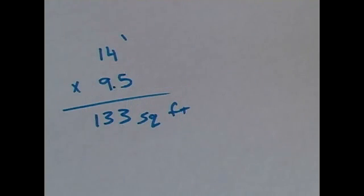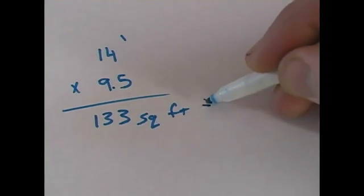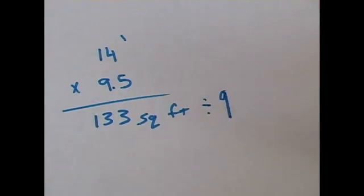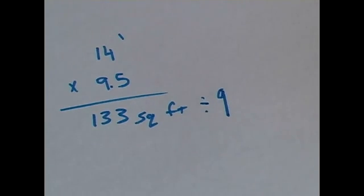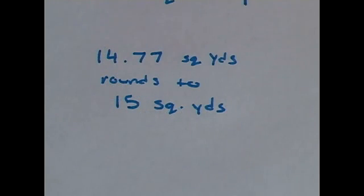Now to convert from square footage into square yards, we need to divide our total by nine. The total then is 14.77 square yards, but I'm going to have to round that to a total of 15 square yards that I'll have to purchase.